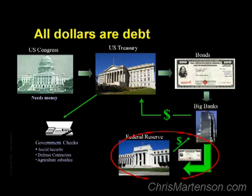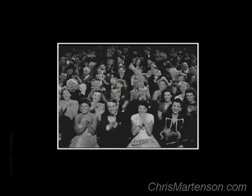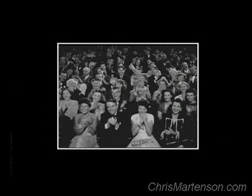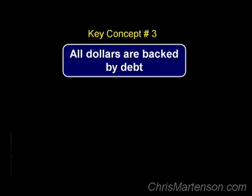The process by which money is created is so simple that the mind is repelled, so don't worry if you need to review this chapter several more times. These monetary learnings allow us to formulate two more extremely important key concepts. The first is that all dollars are backed by debt. At the local bank level, all new money is loaned into existence. At the Federal Reserve level, money is simply manufactured out of thin air and then exchanged for interest-paying government debt. In both cases the money is backed by debt — debt that pays interest.